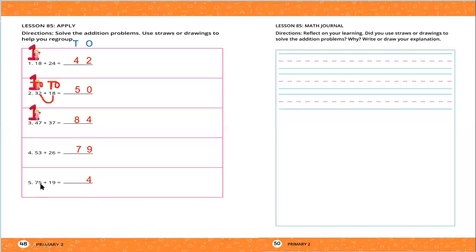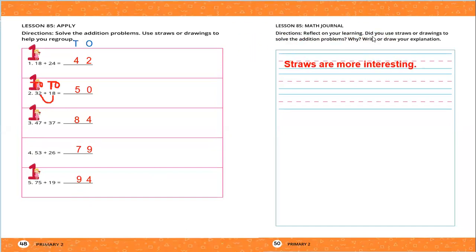Next: 75 plus 19. I will add digits in the ones place: 5 plus 9. After 9: 10, 11, 12, 13, 14. So I will write only 4 and carry up 1. Then 1 plus 7 equals 8, and 8 plus 1 equals 9. So 75 plus 19 equals 94. We use straws — they are sometimes more interesting — but if we want to solve quickly, we add ones with ones and tens with tens without representing the numbers.